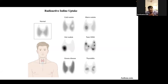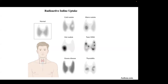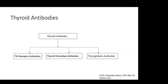Scan findings: hot nodule — hyperfunctioning tissue with excessive radioactive uptake; cold nodule — non-functioning, no uptake; surrounding normal thyroid tissue takes up radioiodine (warm nodule). In Graves disease, uptake is diffusely increased. Toxic multinodular goiter shows normal or increased uptake. Toxic adenoma shows increased uptake in the nodule with suppressed uptake in the rest of the gland.